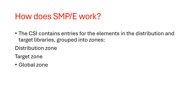The zones are: distribution zone, target zone, and global zone. The global zone contains entries needed to identify and describe each target and distribution zone to SMP, and also collects information about SMP processing options. It has status information for all the SYSMODs in SMP. The system programmer can also use the CSI data set to obtain the latest information on the structure, content, and status of the system, providing reports and listings to help install the system.